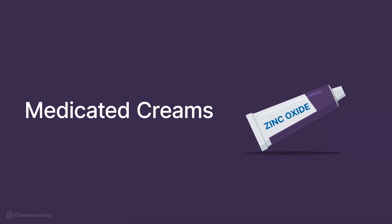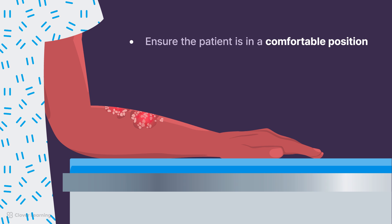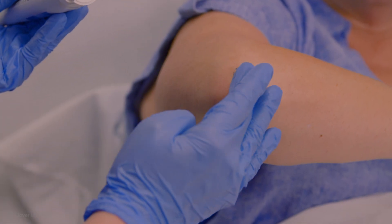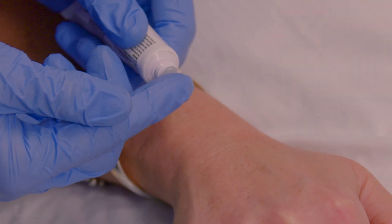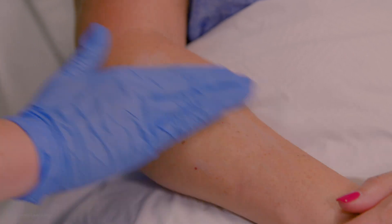First, we'll look at administering medicated creams, ointments, and lotions, like zinc oxide or Neosporin. Ensure the patient is in a comfortable position. Identify and prepare the area for treatment — the skin should be clean and dry. Apply the cream or lotion gently with your gloved hand, using just enough to cover the affected area with a thin film. For instance, with zinc oxide, begin with a pea-sized amount. Ointments are often applied with a wooden blade or cotton swab. Lotions are padded or dabbed onto the skin, and you should always shake lotions prior to administration, as lotion ingredients may separate. Avoid rubbing the medication vigorously, as this can irritate the skin.